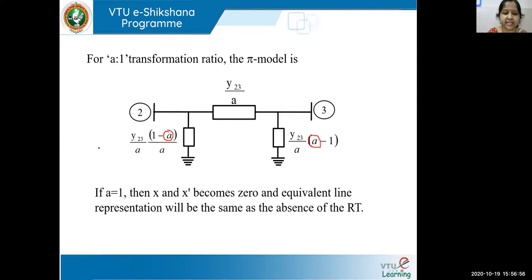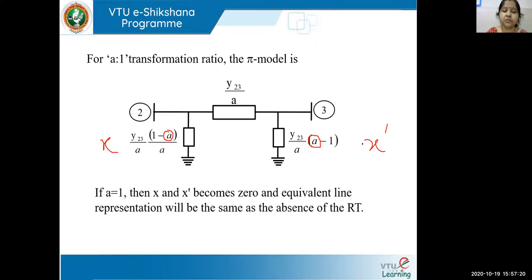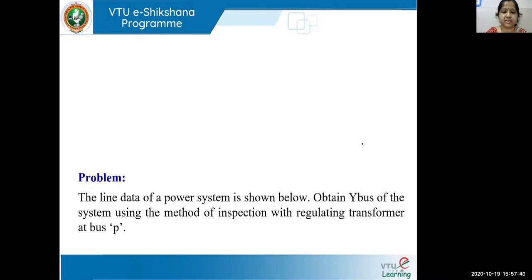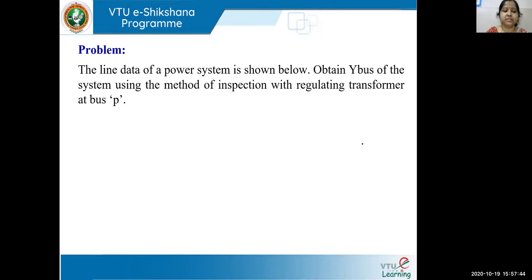The concept of the regulating transformer should now be clear. Remember the formulas for both ratio cases, because when using the inspection method, any line with a regulating transformer must first be converted into its pi model, then the YBUS inspection method is applied. Let us now take a problem: the line data of a power system is given; obtain the YBUS using the inspection method with a regulating transformer at bus p.